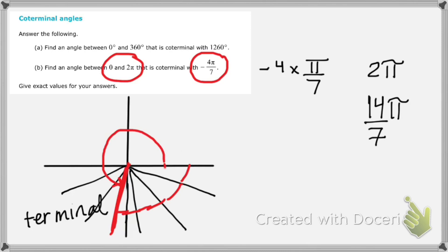If we have gone four of those this way, then how many am I going to need in order to go around this way and end up at the same spot? If there's four here, that means there's going to be 10 over here. So this is an interesting way to think about it. The angle that is between 0 and 2π that is coterminal with negative 4π over 7 is 10π over 7.